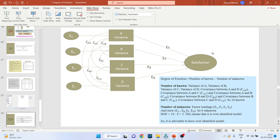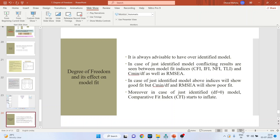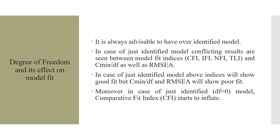What are the consequences of degree of freedom on our model? It is always advisable to have an over-identified model. In case of a just-identified model, conflicting results are seen between model fit indices such as CFI, IFI, NFI, TLI, and Chi-square/df, as well as RMSEA. The above indices will show good fit but Chi-square/df and RMSEA will show poor fit. Moreover, in a just-identified model where df = 0, the comparative fit index starts to inflate.